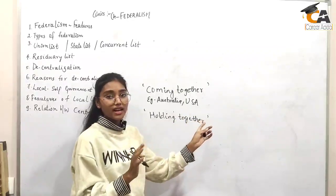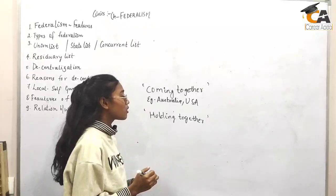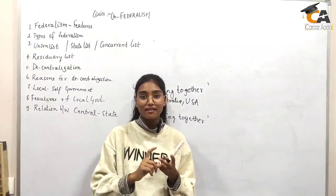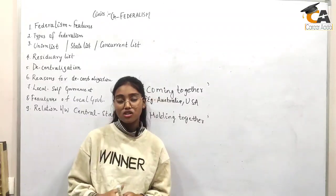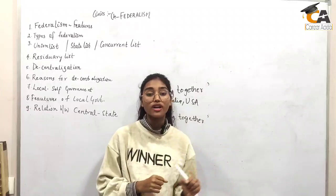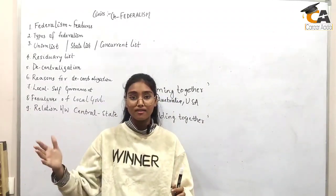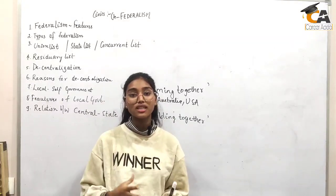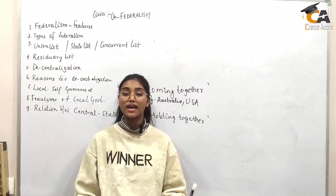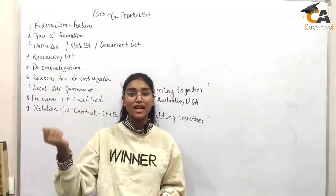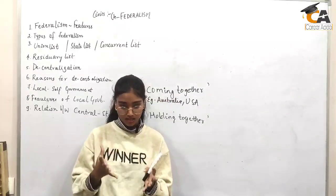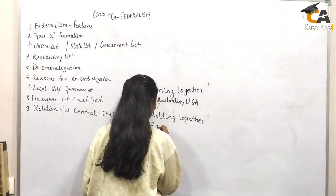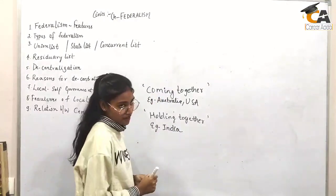Australia and USA are federal countries following coming together federation. Now, holding together federation — India is an example of holding together federation. In India, powers are divided at different levels: state level, local level, and national level. In holding together federation, a different amount of jurisdiction — meaning area of control — is shared across different states, levels, and organs. The central level cannot interfere in state-level decisions, so it is irrespective of the central level. India is a good example of holding together federation and it is a democratic country.